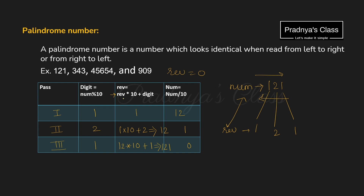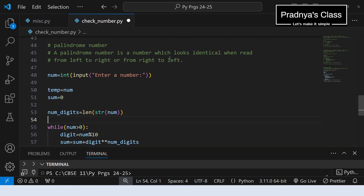To calculate the reverse we use this formula: reverse = reverse * 10 + digit. Look at the values at each pass. Pass 1: digit is 1 (last digit of 121). Reverse = 0 * 10 + 1 = 1. Number reduces to 12. Pass 2: digit is 2. Reverse = 1 * 10 + 2 = 12. Number reduces to 1. Pass 3: digit is 1. Reverse = 12 * 10 + 1 = 121. We got the reverse which is 121. The original number is also 121 — that's why we store the original in a temporary variable.